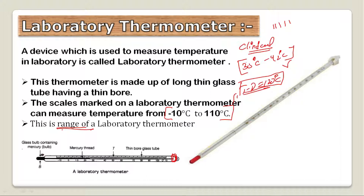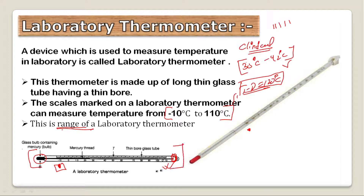The laboratory thermometer has a very small, thin bulb with a mercury thread in the middle. The reading range is typically from minus 10 degrees Celsius to 110 degrees Celsius, though sometimes it can go as low as minus 20 degrees Celsius.